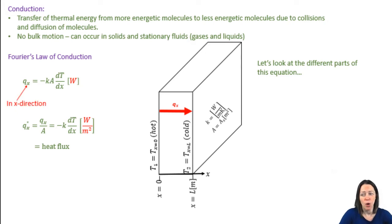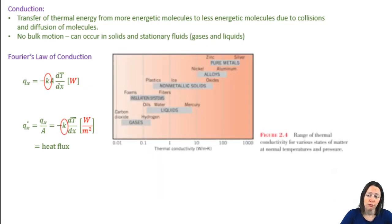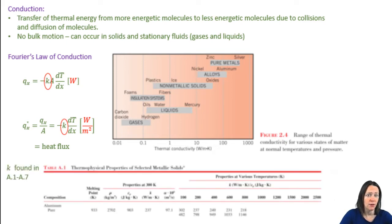Once again, we notice that we're defining this heat transfer rate in terms of the x direction. Now, let's look at k. k is the thermal conductivity of the material. Figure 2.4 in your book shows you the range that you might expect of thermal conductivity for different substances. Note that the thermal conductivity goes from 0.01 to 1,000 watts per meter Kelvin. You can look up the thermal conductivity for different materials in table A.1 through A.7 in the back of your book. You can see that k is a function of material, the phase, solid, liquid, or gas, and the temperature.